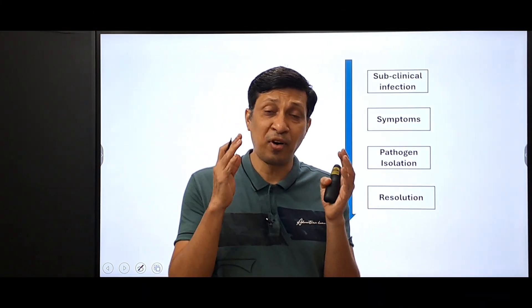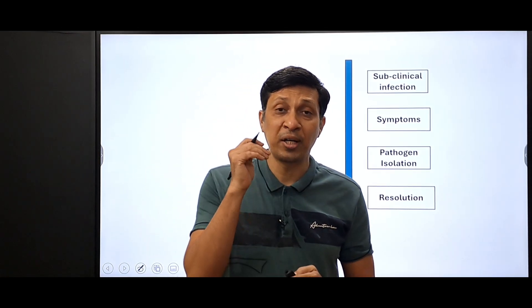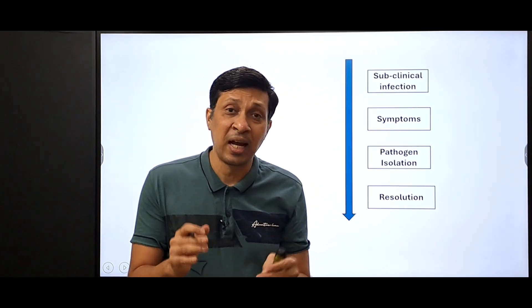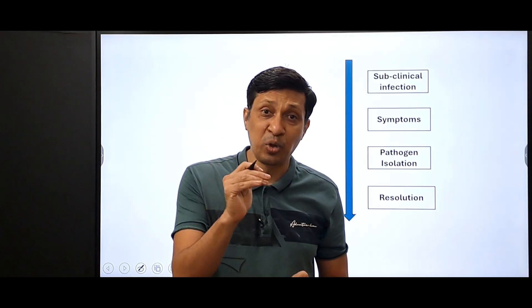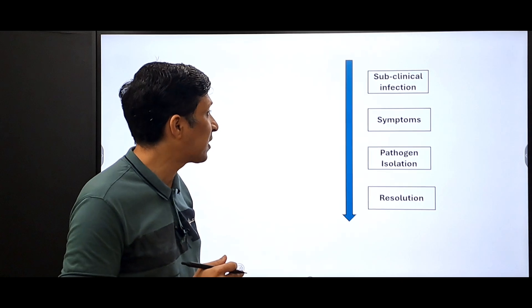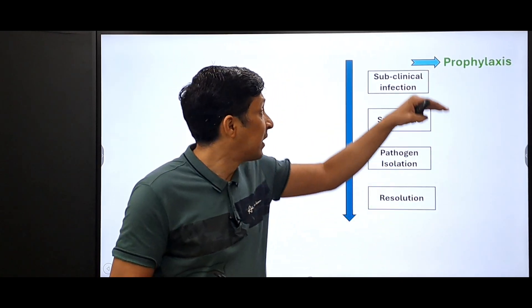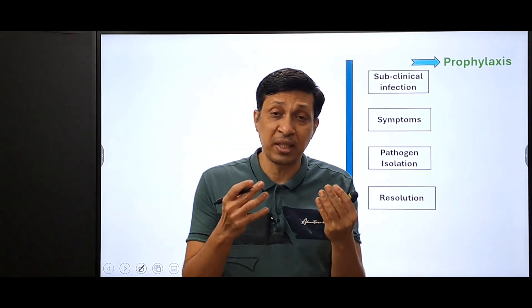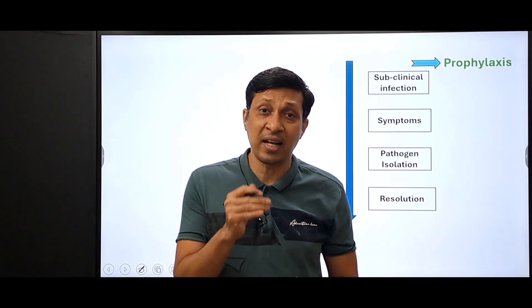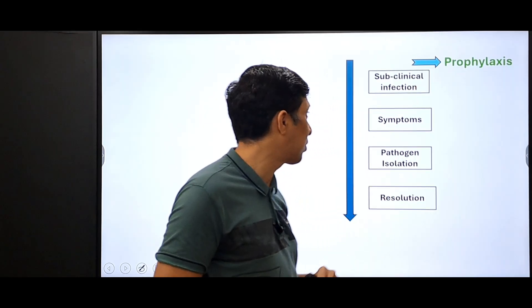To understand the five different ways of prescribing antibiotics, we have to go according to the stages of infection. The first type of antibiotic prescription is called prophylaxis. This comes before the infection comes in the body — there is no infection yet, but conditions are such that there may be infection in the patient.